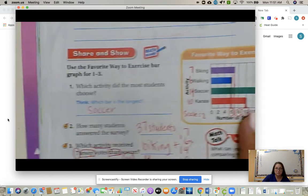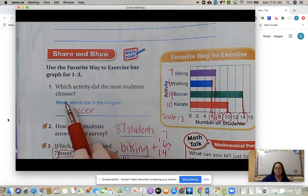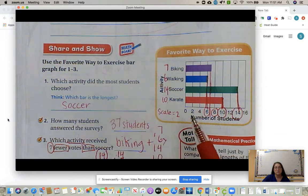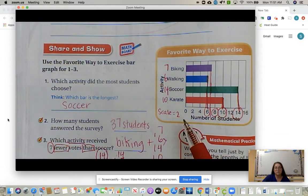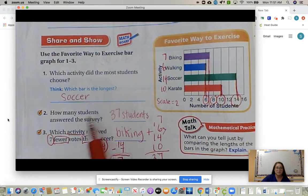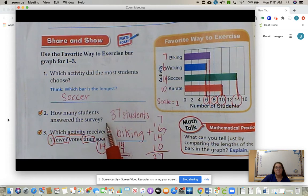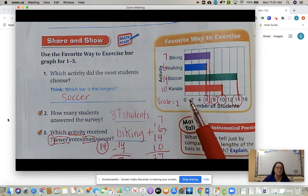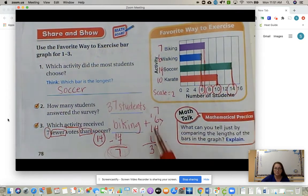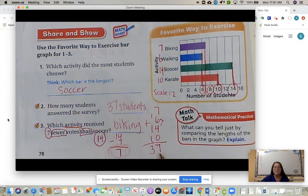Now we can answer the questions. Which activity did the most students choose? Think, which bar is the longest? We already did that. We already know what students chose the most, and that was soccer because that's our greatest number. How many students answered the survey? This is a question that was in all our other homeworks. Even though it's a different chart, we still do the same. We're going to add up all the numbers that we have in our chart. That's telling us they asked 37 students, what is your favorite way to exercise?